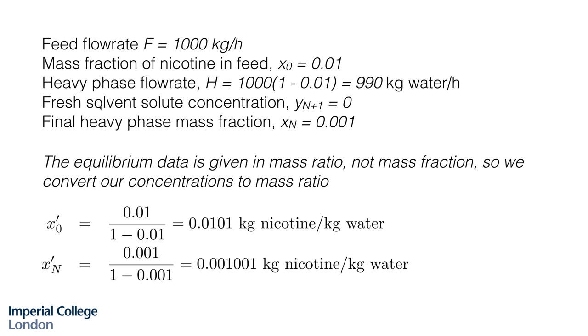Our fresh solvent, which is pure kerosene, has a solute concentration of 0 and we are told that the final concentration of nicotine in the aqueous phase should be 0.1%. So that corresponds to X n equals 0.001. Now, the equilibrium data that we're given is in mass ratio, not in mass fraction or mass percent. So we are going to convert these concentrations to mass ratios so that we can do our working in mass ratios.